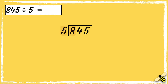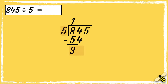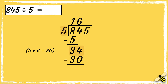So first, we need to see how many times 5 goes into 8. 5 times 1 is 5, so 5 goes into 8 once. We now need to find out what's left over. Now we can work out how many 5s go into 34. 5 times 6 is 30, so 5 goes into 34 six times. We now need to find out what's left over, so 34 take away 30 is 4.